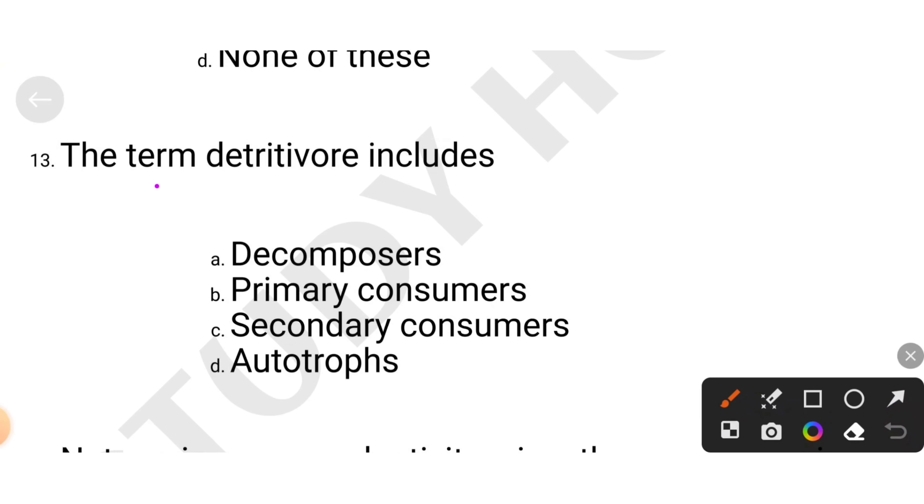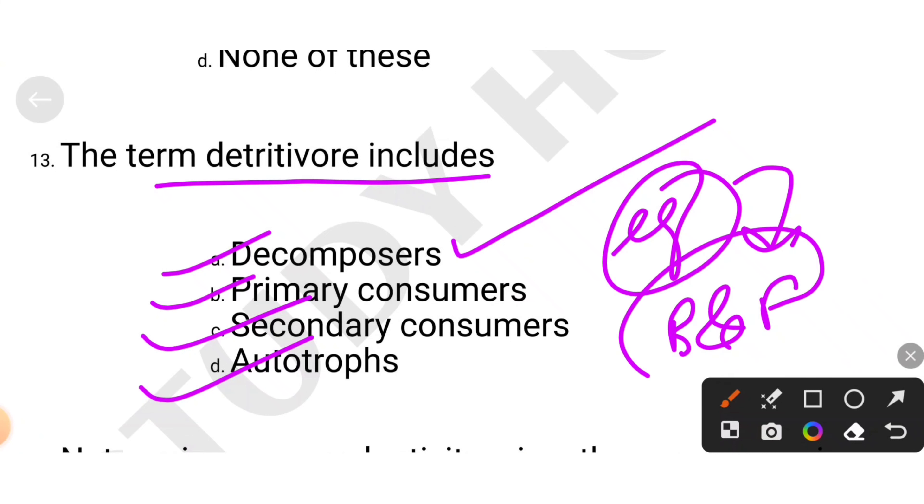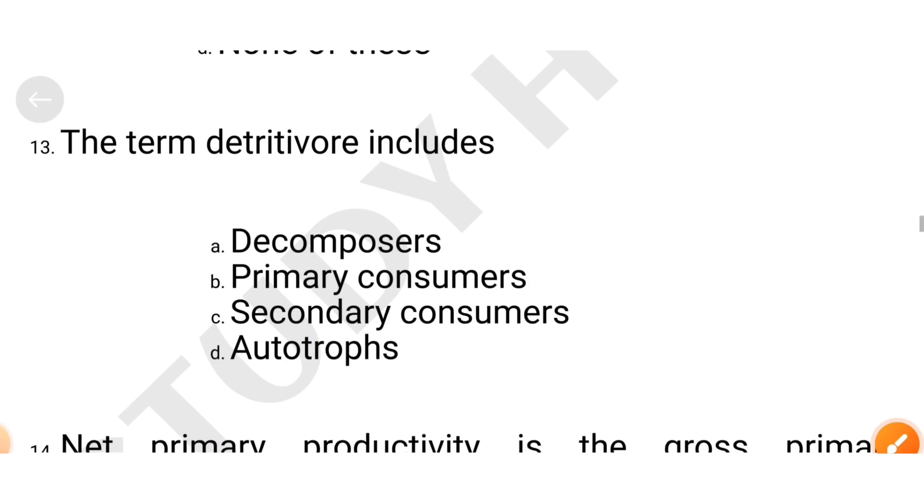The term detritus includes decomposers, primary consumers, secondary consumers, or autotrophs. Detritus food chain, so detritus are decomposers. We have studied examples, in example first bacteria and fungi act. So they are detritus, decomposers.